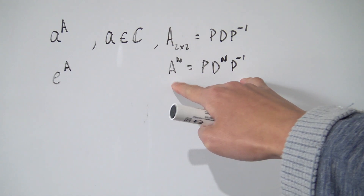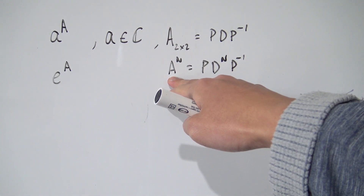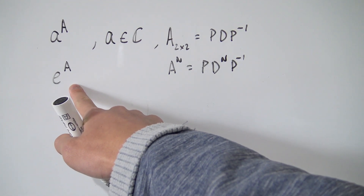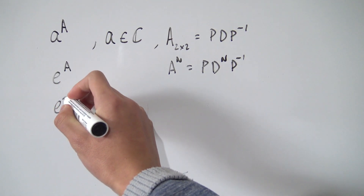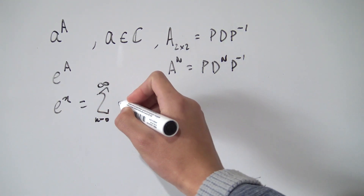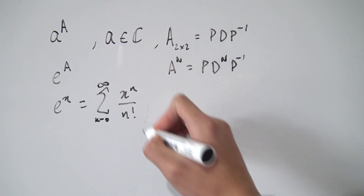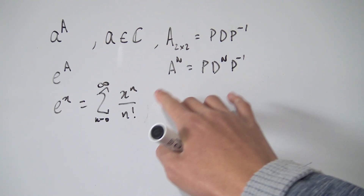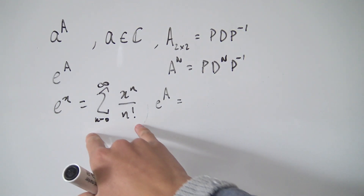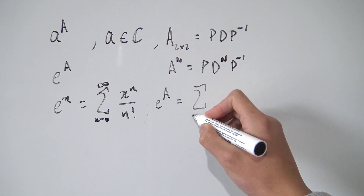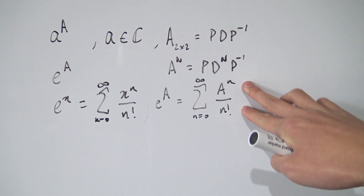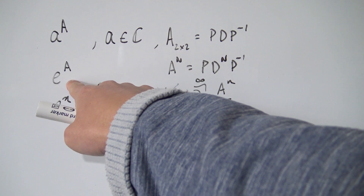Since we can define A to the n, we can use a power series to express e to the A. The Maclaurin series of e to the x is exactly the sum from n equals 0 to infinity of x to the n over n factorial. We can apply this to our matrix, so e to the A is defined as the sum from n equals 0 to infinity of A to the n over n factorial.